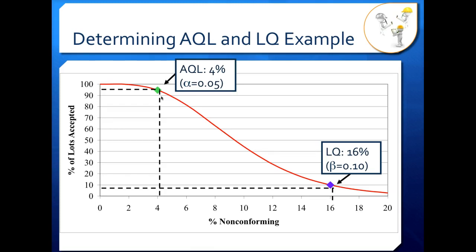We can use producer's and consumer's risk to actually construct sampling plans. Say we have an AQL we want to be 3% and an LQ we want to be 20%. We can construct an OC curve that goes through both of those points, which will set our acceptance number C and our sample number N. We can also set the acceptance quality limit at a certain percent and look at different sampling plans through that percentage, examining differences in sample number and the number nonconforming allowed before rejecting. These are valuable tools when constructing your OC curves for your sampling plan.